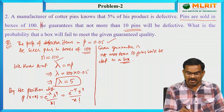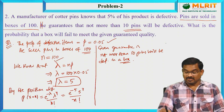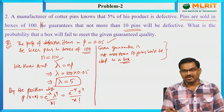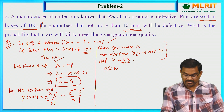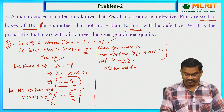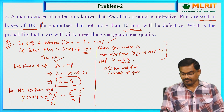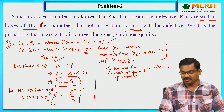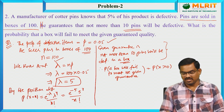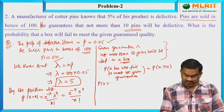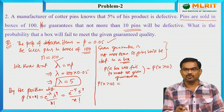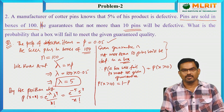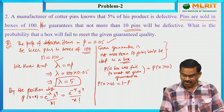We need to find the probability that a box will fail to meet the given guarantee. The guarantee fails if there are more than 10 defective pins. Therefore, the probability of a box failing to meet the guarantee equals P(X > 10). Instead of finding 90 values, it is better to use the property that total probability is always unity: P(X > 10) = 1 − P(X ≤ 10).